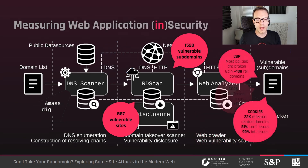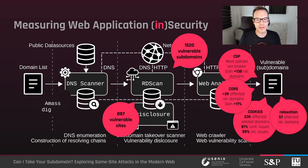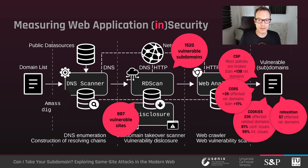Our pipeline also employs the methodology discussed before to identify practical vulnerabilities in the related domains of the vulnerable sites. Related domain attackers have a noticeable gain over web attackers. For instance, considering cookies, we discovered 23,000 domains with either confidentiality or integrity issues, with the latter being ubiquitous.